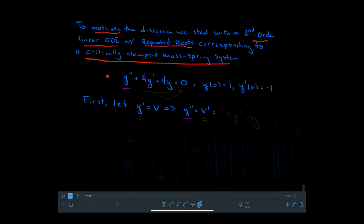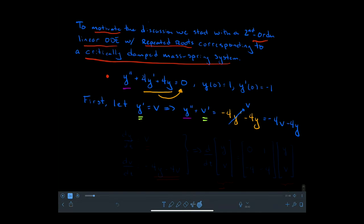Because of the form of the ODE, if y' is v', then v' is all of the other stuff in the ODE moved over to the right-hand side. So v' is equal to negative 4y' minus 4y, using the ODE itself. But we have another name for y' — it's just v — so this is negative 4v minus 4y. This gives us two differential equations: dy/dt = v, and dv/dt = negative 4y minus 4v.